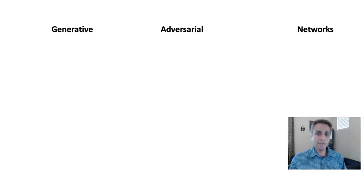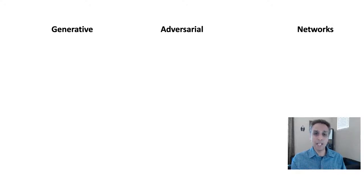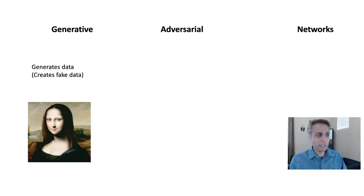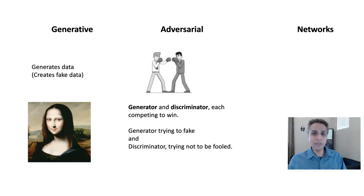I've done a couple of videos on GANs in the past, but if you're watching this for the first time, here is a crash course. They are called generative adversarial networks because you're generating data — in this case, generating images. Generating means you're generating fake data that may look realistic but is fake. Adversarial because the network has two components that are adversarial to each other.